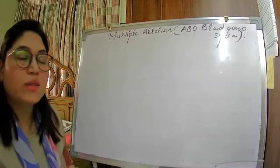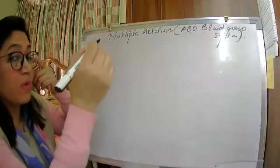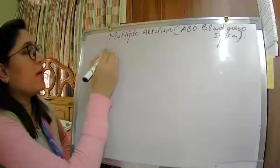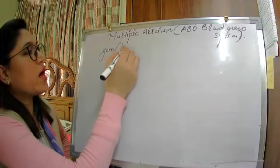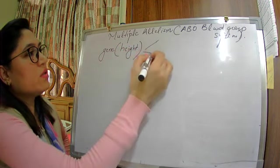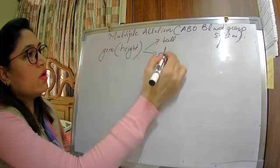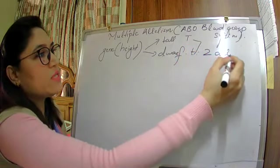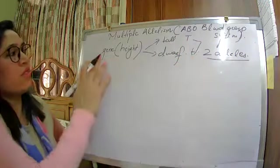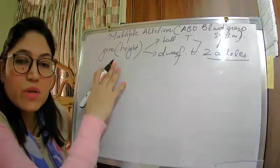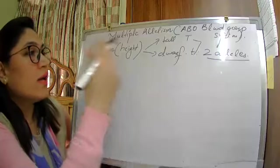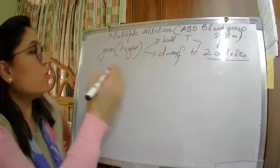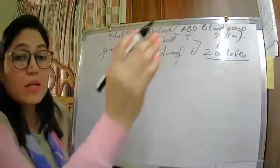Till now we have studied that one gene can have two alleles — for example, the height gene has two forms: tall (T) and dwarf (t), which are two alleles of the same gene. But now I say there is one gene which has more than two alleles. That gene is called the i-gene.